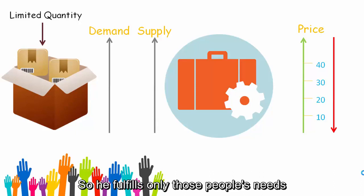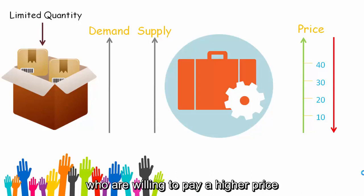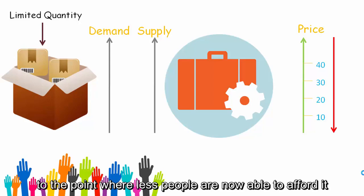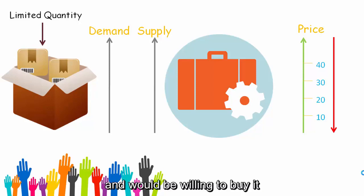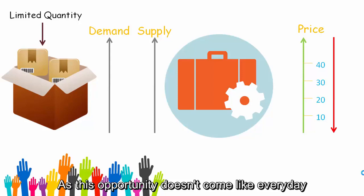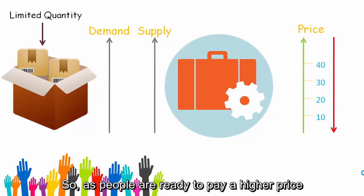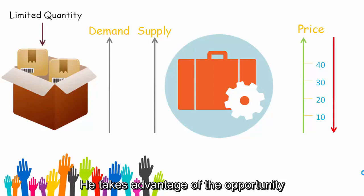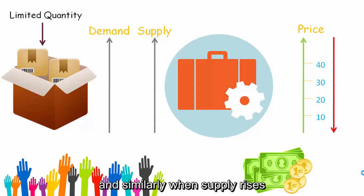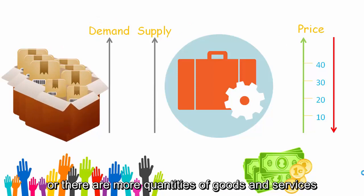He fulfills only those people's needs who are willing to pay a high price, so he increases the price to the point where fewer people can afford it and are willing to buy. He can then fulfill that demand and profit from the high price, since this opportunity doesn't come every day. As people are ready to pay a high price, he takes advantage of the opportunity and profits from it.